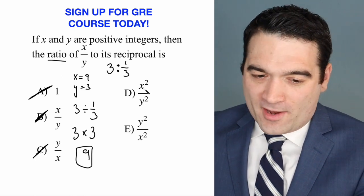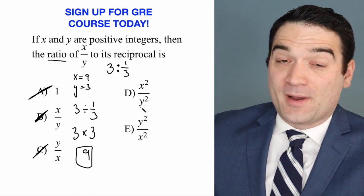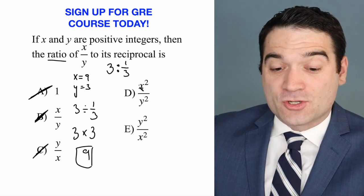Is 9 squared, so 81, divided by 3 squared, 9, equal to 9? Aha, it sure is.